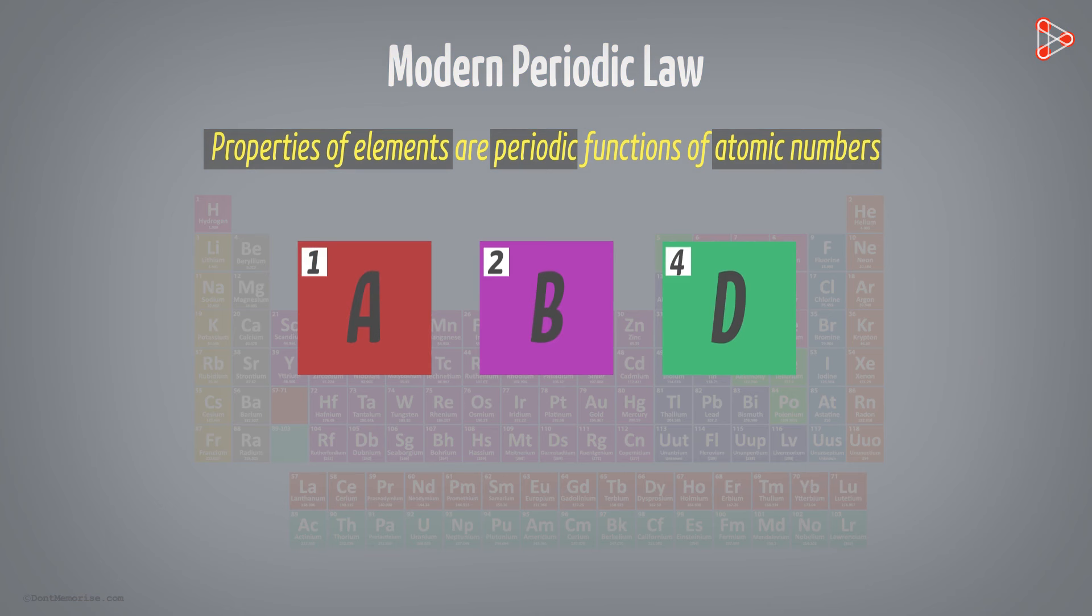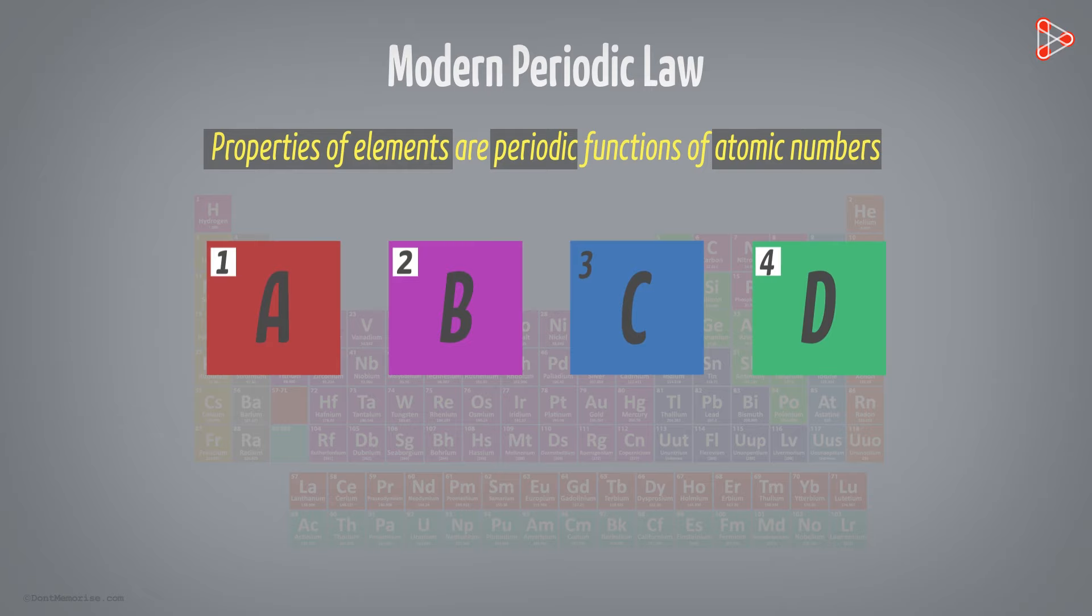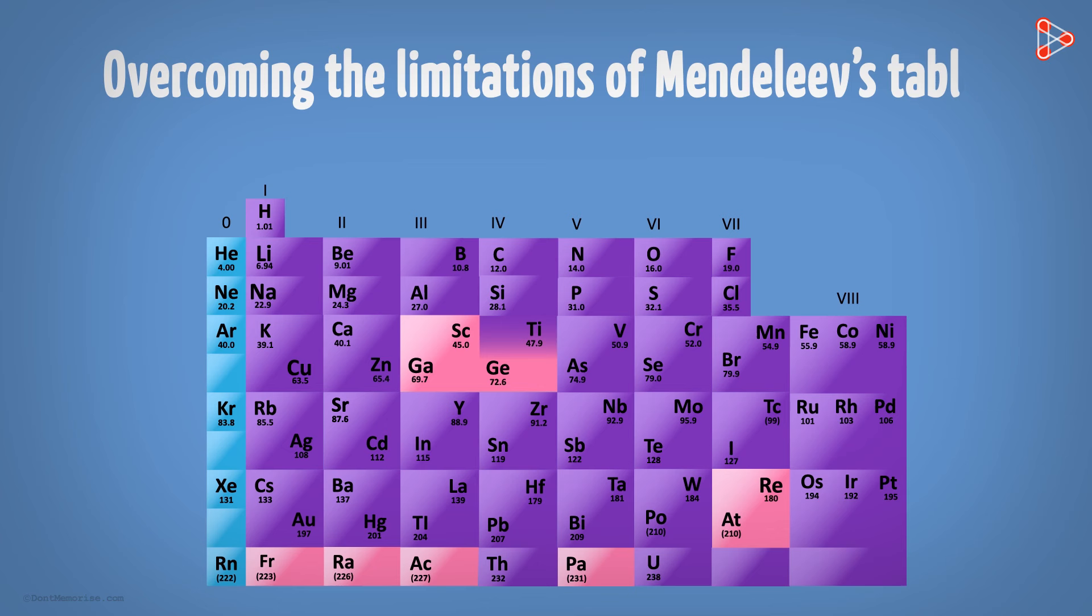All the known elements could be arranged based on their atomic numbers. With this, predicting the properties of elements yet to be discovered got simpler and more precise. This helped in placing the newly discovered elements properly in the periodic table. Also, overcoming the limitations of Mendeleev's table was another advantage.